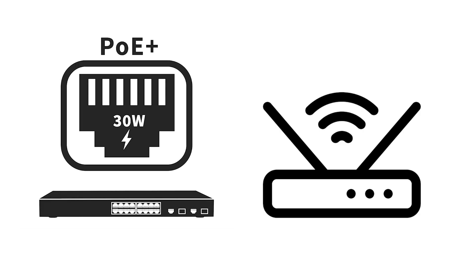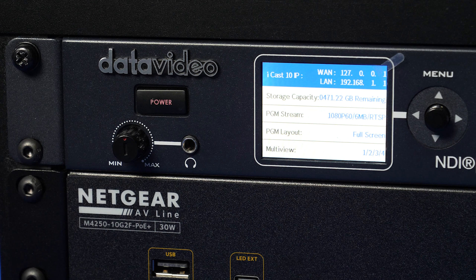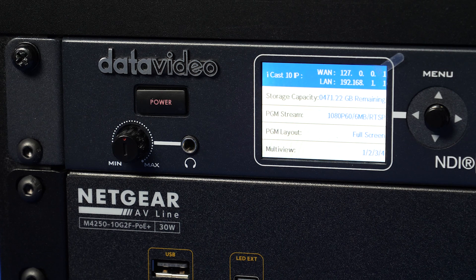First we're going to connect the iCAS10 NDI to a network. You have two options to connect to a network. The first is you can connect it to a traditional router, and the second is you can connect it to a switch. If you're going to have your NDI cameras on PoE (Power over Ethernet), you're going to need a PoE switch in addition to a router.